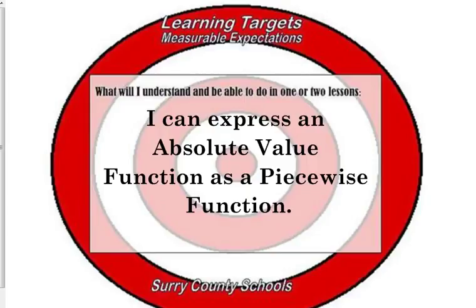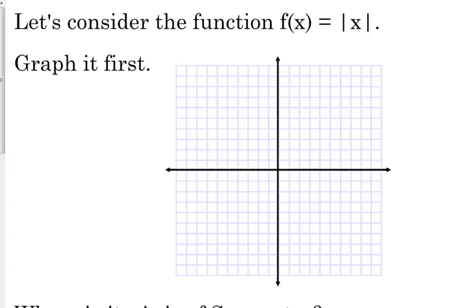We're going to express an absolute value function as a piecewise function. First of all, we're going to consider the function f of x is equal to the absolute value of x. We're going to graph it first.